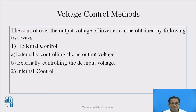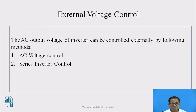External control is divided into two types: externally controlling the AC output voltage and externally controlling the DC input voltage. The AC output voltage of the inverter can be controlled externally by the following methods: AC voltage control and series inverter control.